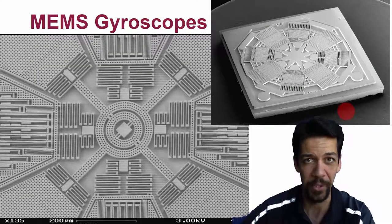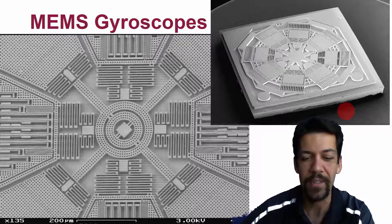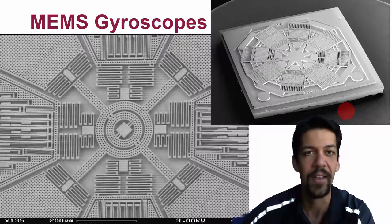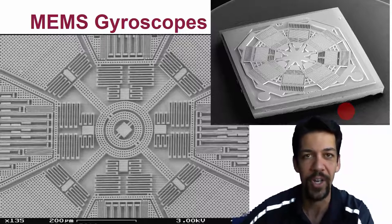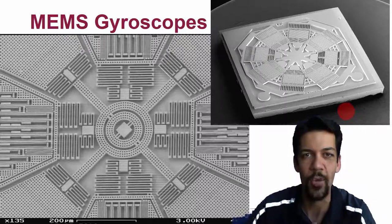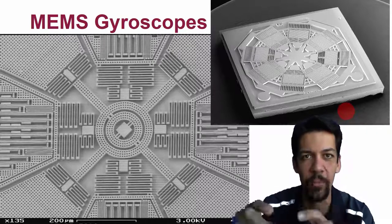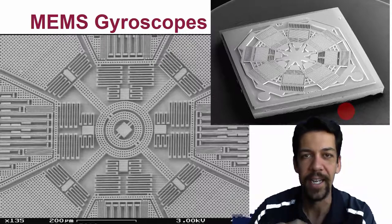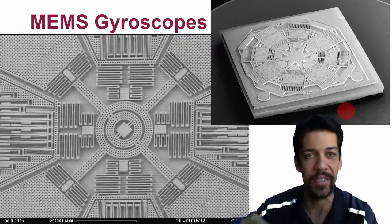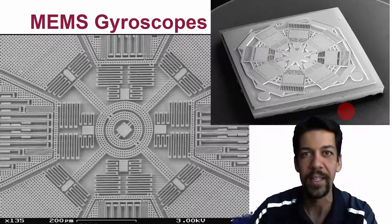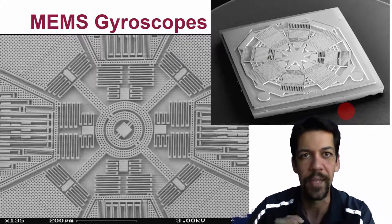MEMS gyroscopes are beautiful. The way these are built is we set up vibrating masses, we vibrate them in the chip, and we can watch how they vibrate. To measure vibration in a bunch of different directions, we have to set up these little snowflake-type structures that allow us to vibrate proof masses in different directions at the same time. We average them and do some processing.